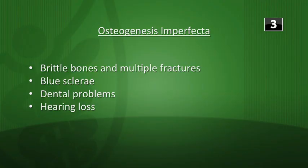The last warm-up question: what are the clinical features of osteogenesis imperfecta? You're going to think about brittle bones, and that leads to multiple fractures. You'll see blue sclerae, dental problems, and also hearing loss.